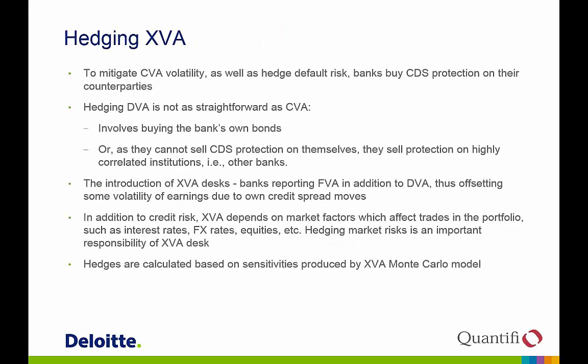Regarding hedging cross-VA: desks traditionally called CVA desks are now cross-VA desks, because it has proven practically much easier to deal with all valuation adjustments in one centralized place. CVA and DVA together constitute bilateral CVA and should be taken together. FVA should also be part of the same desk or group, since you are looking at basically the same exposures. FVA depends on positive exposure, similarly to CVA, and also depends on your own spread, similar to DVA. So FVA is a hybrid between CVA and DVA and should be calculated in the same system.